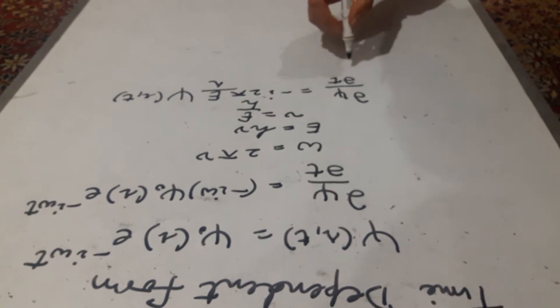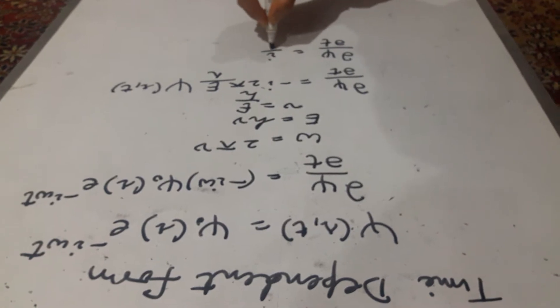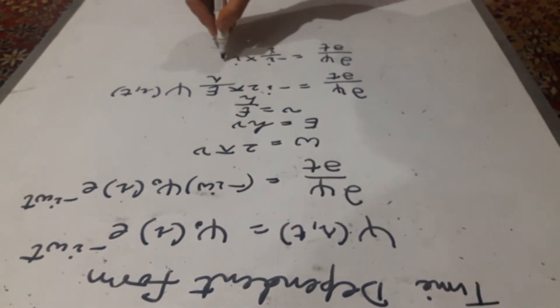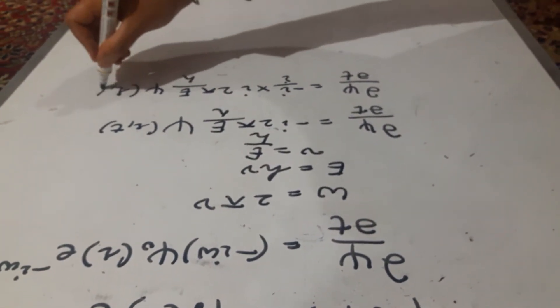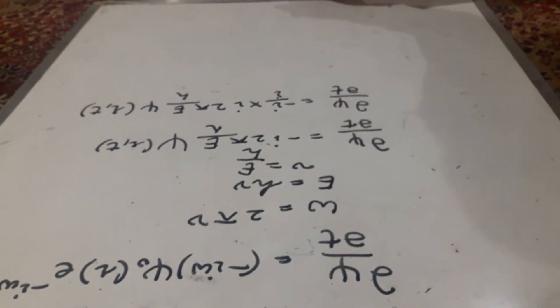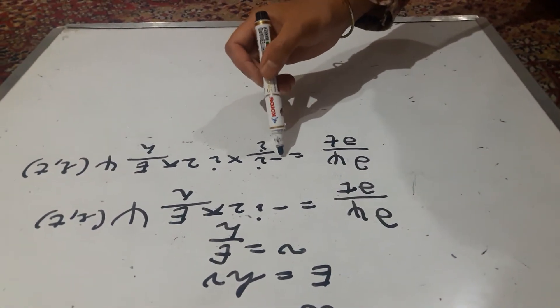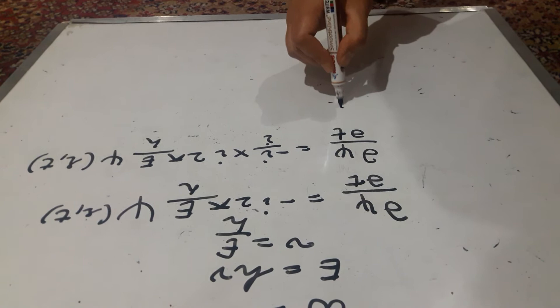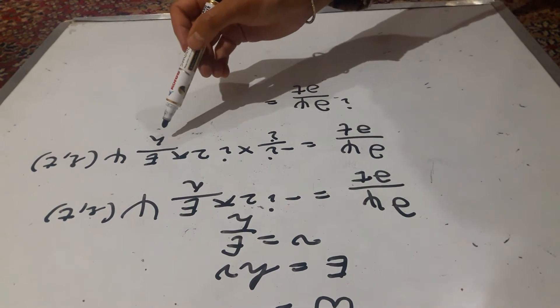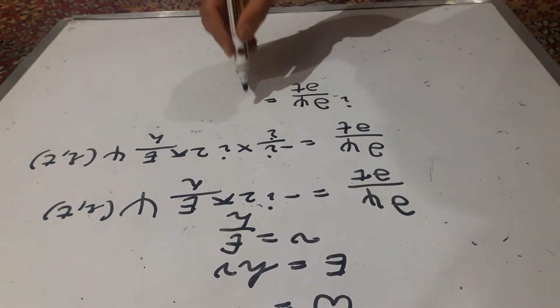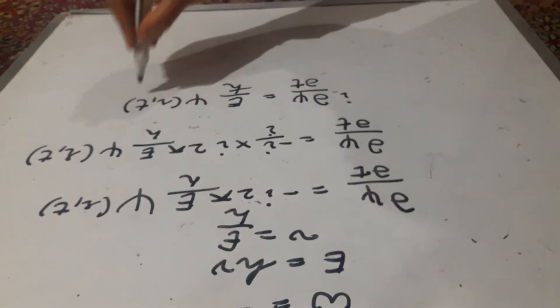Now let us multiply and divide this equation by iota. This is iota by iota into iota 2 pi e by h psi of r t. Iota square is minus 1, then it is plus 1 and take this iota here. So it is iota dow psi by dow t. And this term here, I hope you recognize that h by 2 pi is h cross. So it is e by h cross psi of r t.